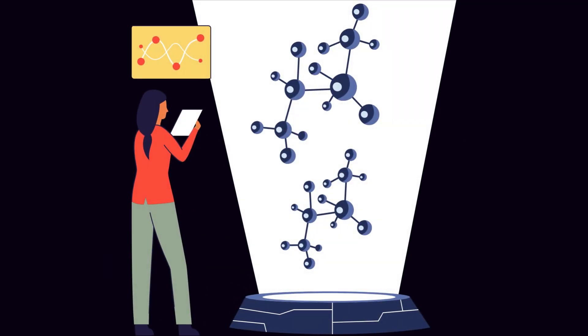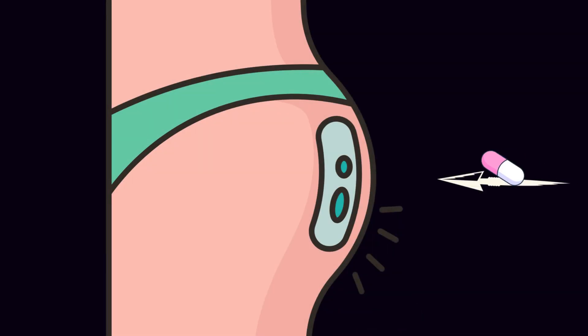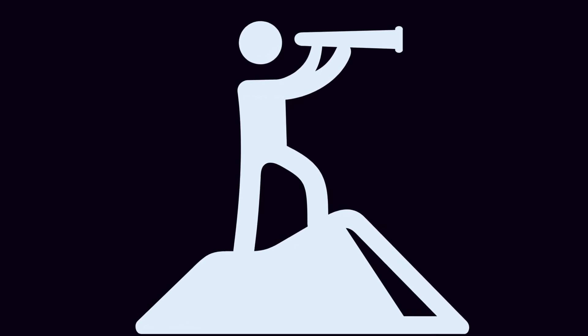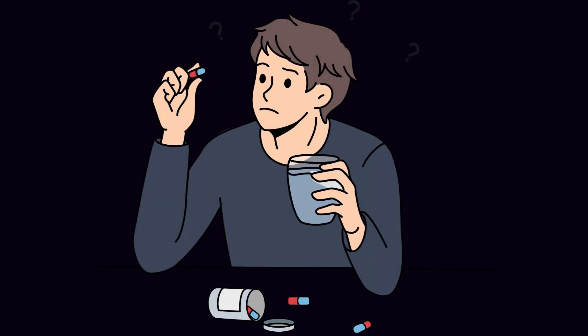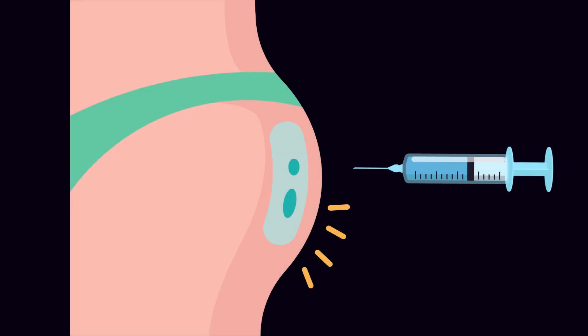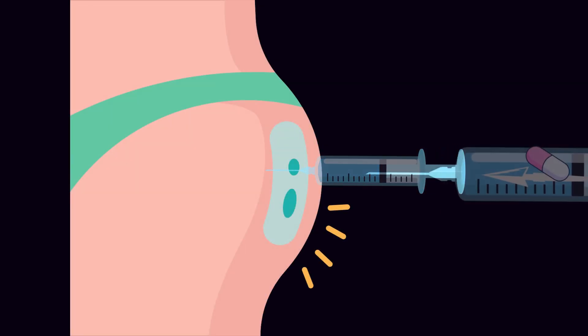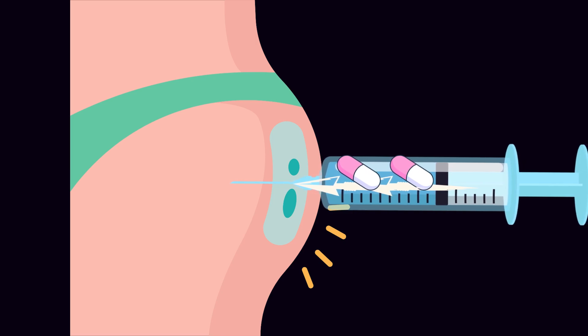And while lab results are promising, large-scale human trials are needed before nanotechnology can become part of everyday HIV treatment. Still, the vision is clear. One day, instead of taking a daily pill, a person with HIV might get an injection every few months—a shot loaded with billions of microscopic couriers, each on a mission to seek and destroy the virus.